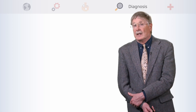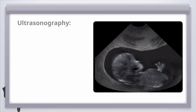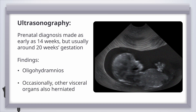For diagnosis and monitoring, ultrasonography is our best friend. Most of the time we make a prenatal diagnosis as early as 14 weeks, but usually around 20 weeks or mid-gestation. Findings include oligohydramnios — a reduced amount of amniotic fluid — and occasionally other herniated organs such as the liver. This is an ultrasound image with the head to the left, and a green arrow pointing to a very obvious defect in the abdominal wall with loops of bowel sticking out.